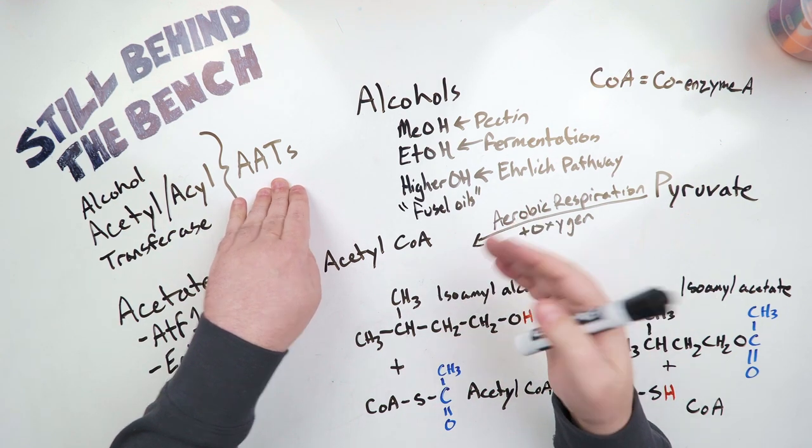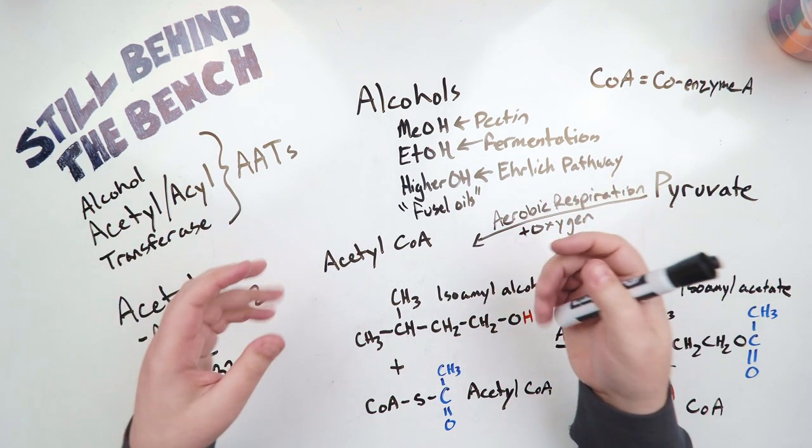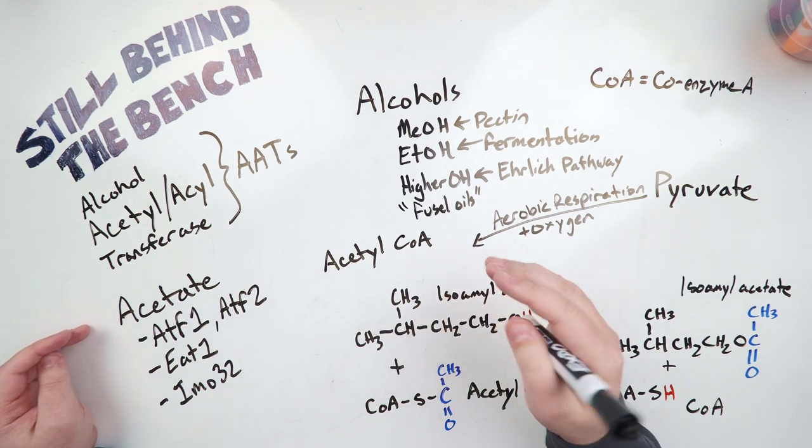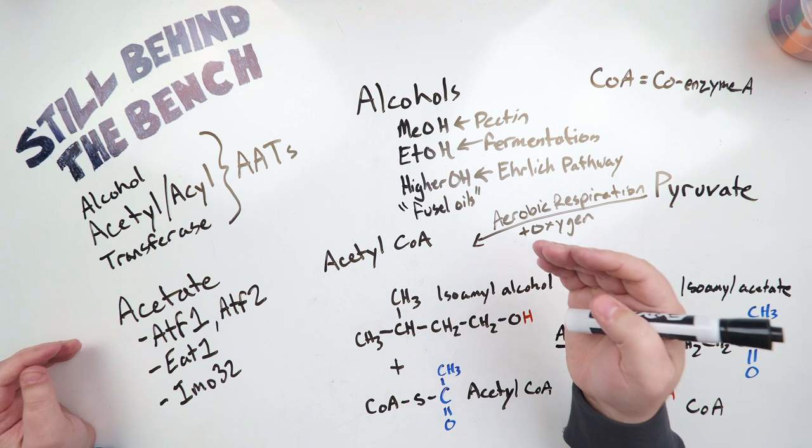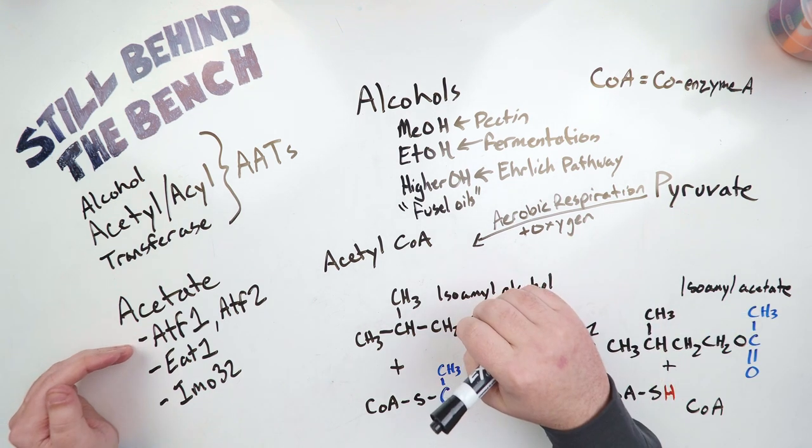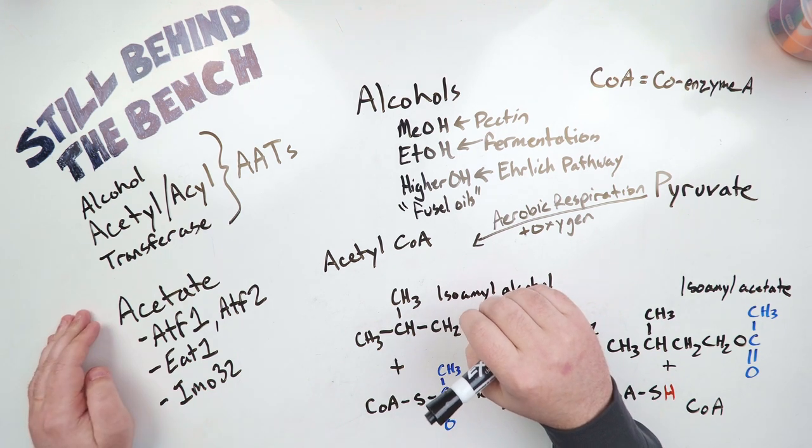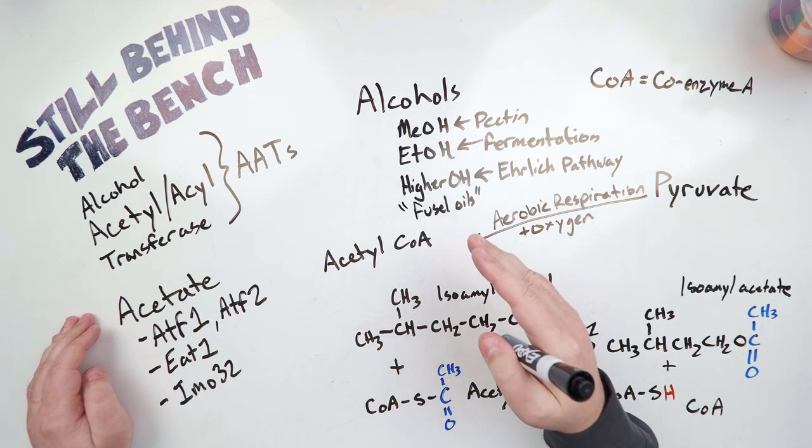But generally speaking, you can just refer to them as AATs. So first, our acetate enzymes. There are a bunch of enzymes involved in creating acetate esters, ATF1 and ATF2, EAT1 and IMO32. These are the ones that are currently known, who knows how many others there are.